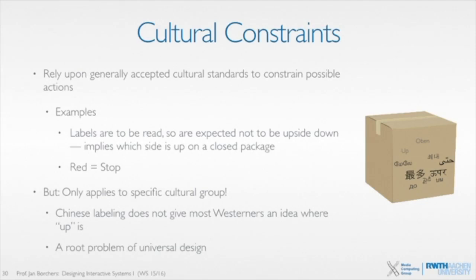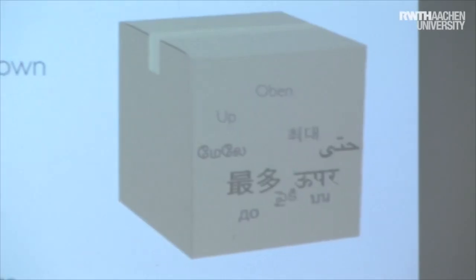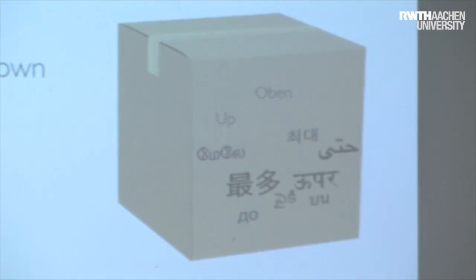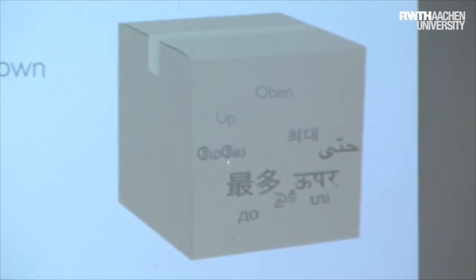Cultural constraints rely on generally accepted cultural standards to constrain possible actions. For example, if you get a labeled package, you'd expect the labels not to be upside down, which implies which way is up — even if you can't read the language, as long as you recognize the script. But if you're from Germany and receive a package with only Chinese labels, you couldn't tell which way is up unless you can read Chinese characters. 'Red equals stop' is another cultural constraint — it only applies to specific cultural groups.